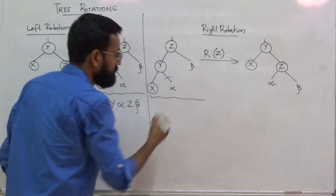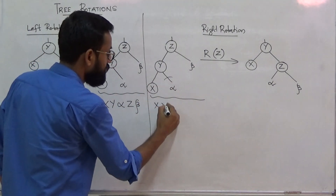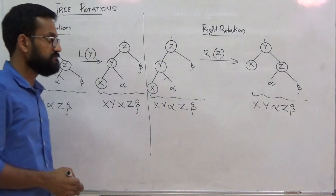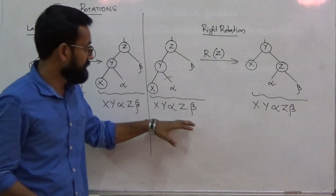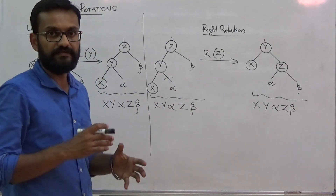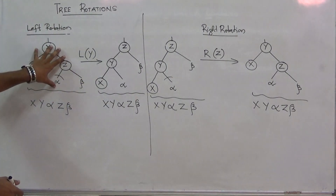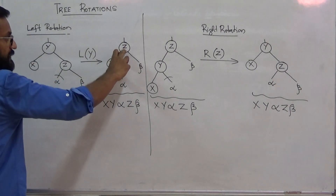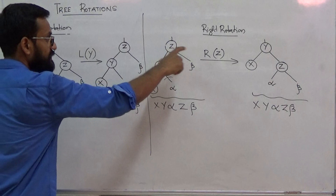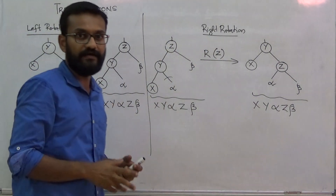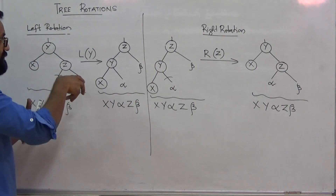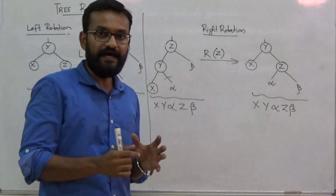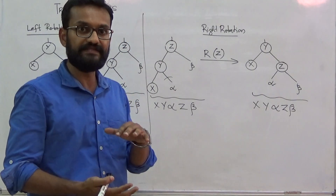Taking the inorder traversal: before rotation it gives x, y, alpha, z, beta, and after rotation it also gives x, y, alpha, z, beta. So before and after rotation the inorder traversal remains the same, which indicates that the rotation performed is correct. If you consider the tree rooted at y and perform a left rotation to obtain a tree rooted at z, then performing a right rotation with respect to z on that result gives back the initial tree. So left rotation followed by a right rotation on the result will yield the previous initial tree. These are the two main tree rotations used to balance binary structures.